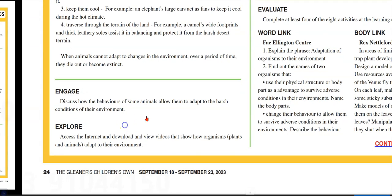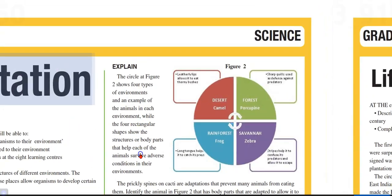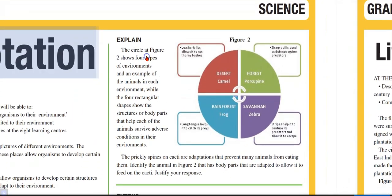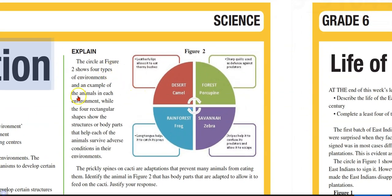So let's go to the explain section. It says the circle in Figure 2 shows four types of environment and an example of the animal in each environment, while the four rectangles show the structure or body parts that help each of the animals survive adverse conditions in their environment.